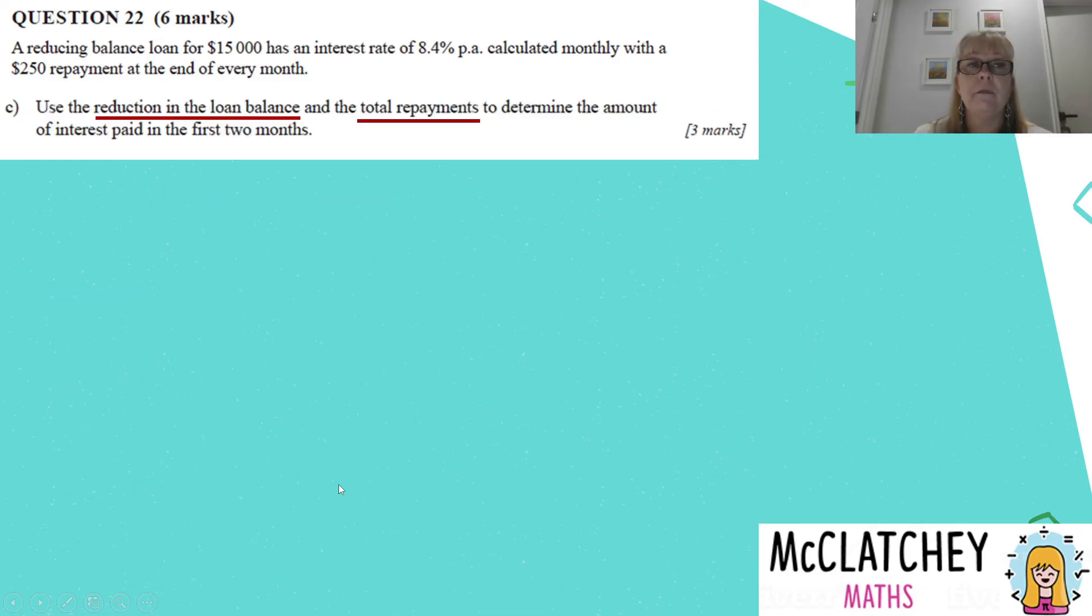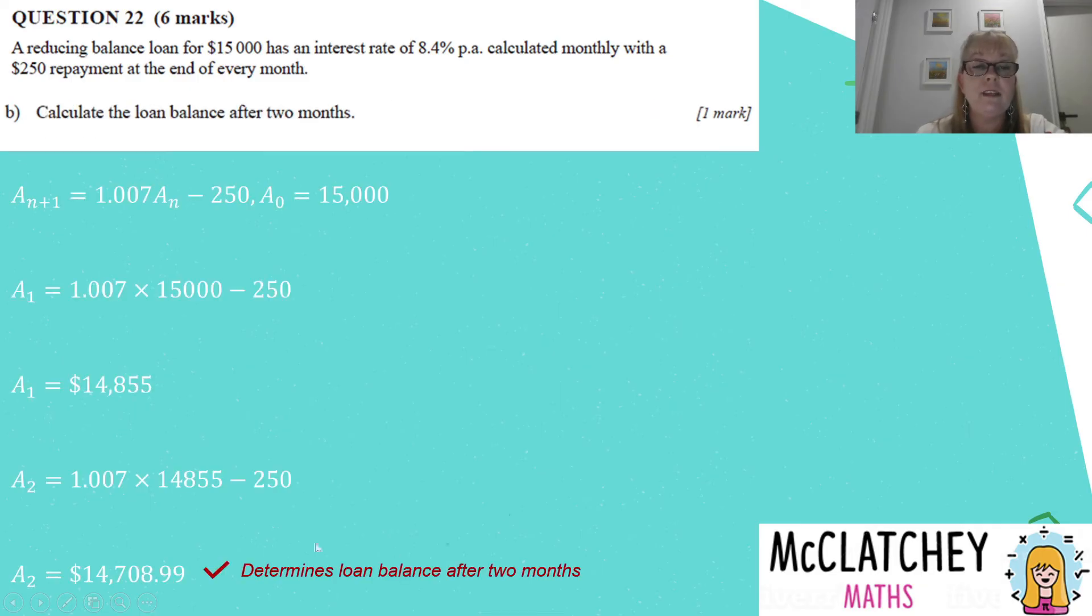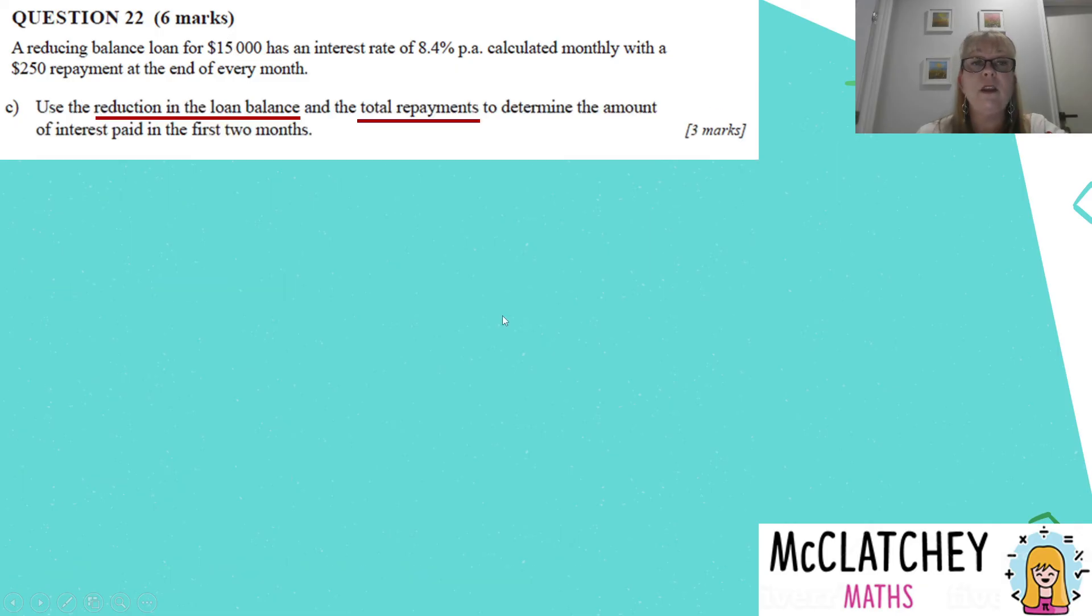Now this is where the question is going to get complicated. Part C. I need to use the reduction in the loan balance and the total repayments to determine the amount of interest paid in the first two months. This is worth three marks. Now if you go to the QCAA's website, they have two different solutions for this question. So there are different ways to get to the same result. What's really important is that you're communicating very clearly because this is worth three marks and there are some complicated steps in here. So the first part is they've actually given us a clue about how to solve the problem. We need to work out the reduction in the loan balance. If we go back to our previous slide, the loan balance after two months is $14,708.99. It's reduced from $15,000. So if we find the difference between those two amounts, we're going to get the reduction in the loan balance and it's $291.01. So we have reduced that loan's value by $291.